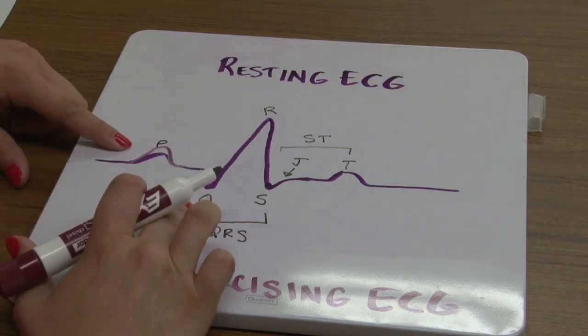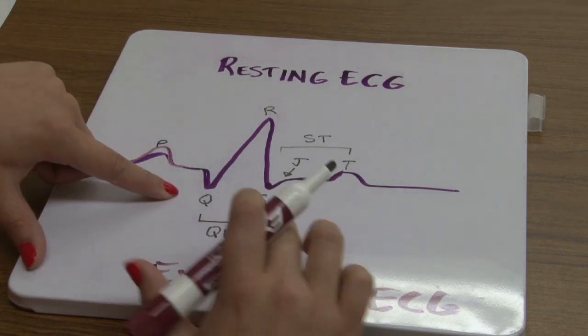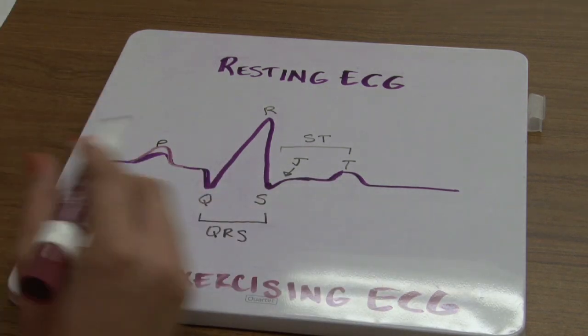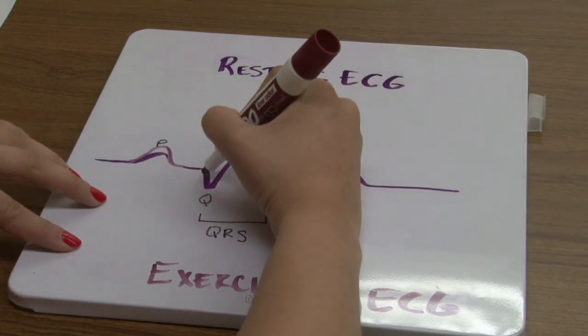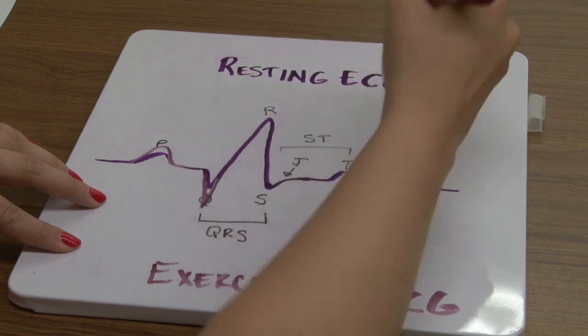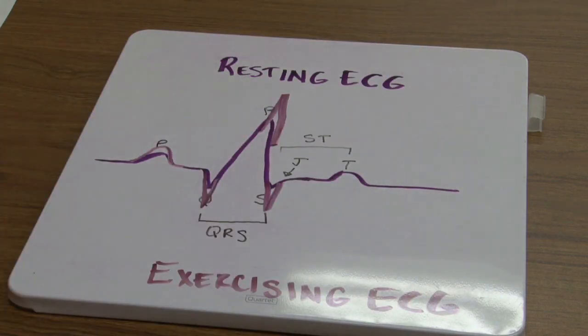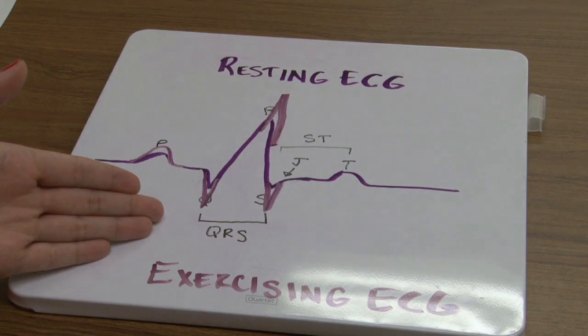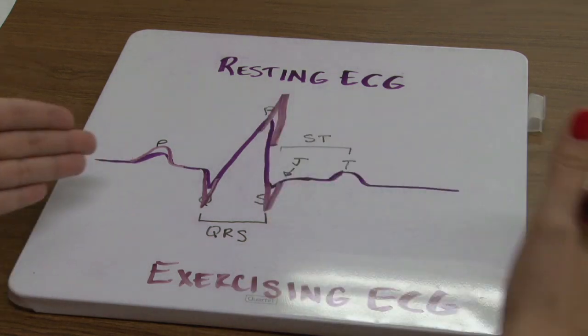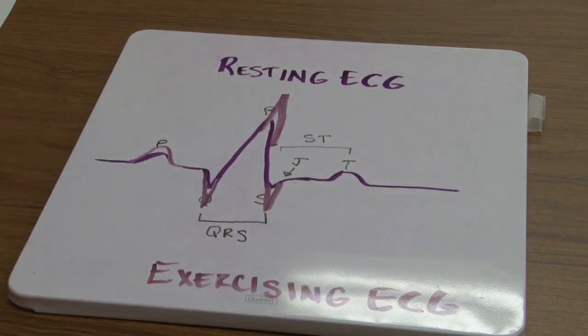Next we'll look at the QRS segment. And in here we will see some individual changes. Firstly, the amplitude of the Q, R, and S waves will increase, so we'll see a much greater difference. However, in the QRS segment, there will be very minimal changes in time. It won't get larger or smaller, it'll still take about the same time.